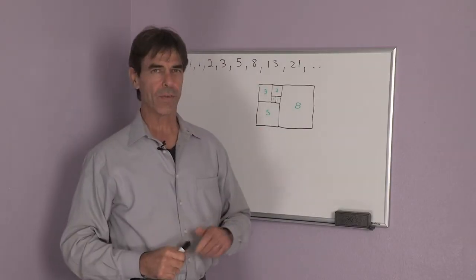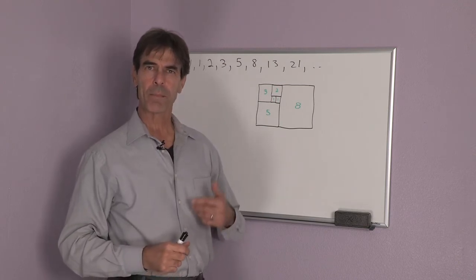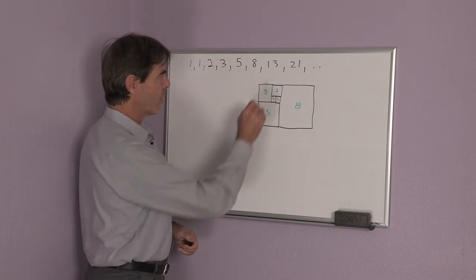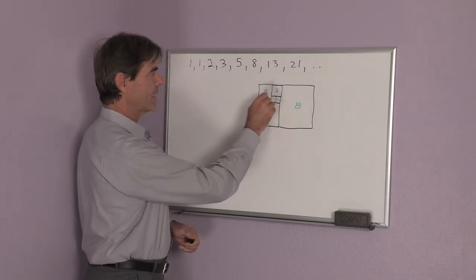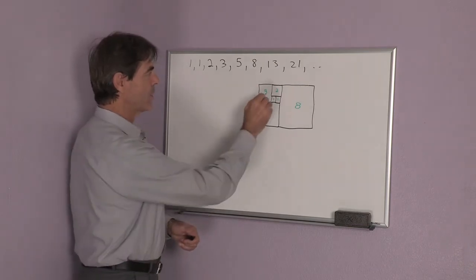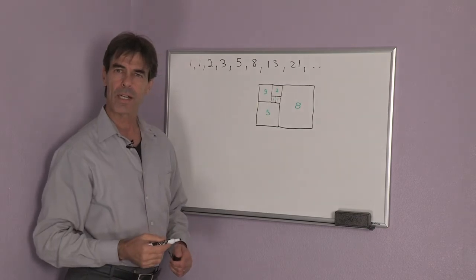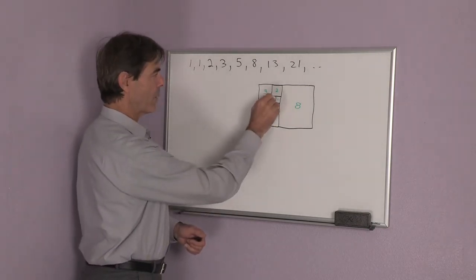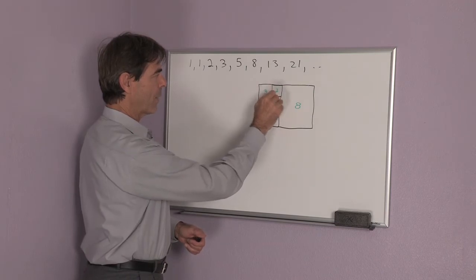Now this is a very interesting sequence for a number of reasons. If you look at squares, and you start off with two squares that have sides of 1 and 1, and on top of these two squares you put another square which has a side equal to the length of the two previous squares. So then I would have 1 plus 1, I would have 2.